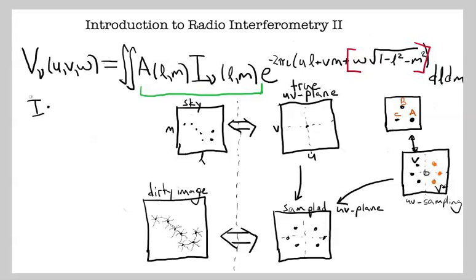So we took the Fourier transform of our true sky, I, and we multiplied it by the sampling pattern of our array, which I could call V. And then we took that whole thing and we took the Fourier transform of it.